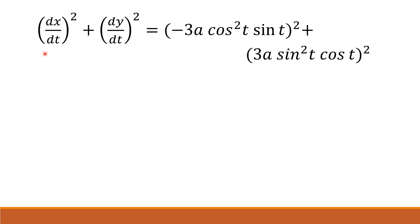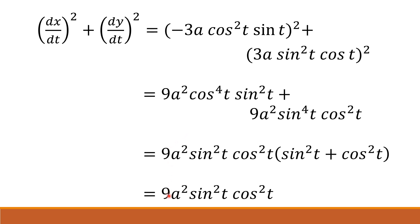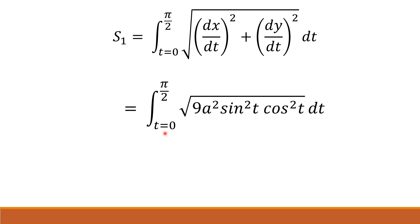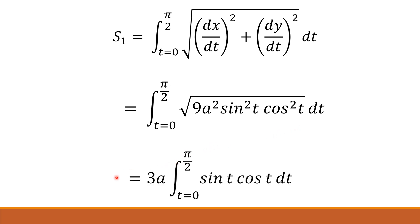Now we obtain the term inside the integral, (dx/dt)² plus (dy/dt)², by substituting the derivatives. Simplifying, we get 9a² sin²t cos²t. Replacing this in the arc length formula, s1 becomes the integral from 0 to π/2 of the square root of 9a² sin²t cos²t dt. Taking the square root gives 3a sin t cos t, and since 3a is constant, s1 equals 3a times the integral from 0 to π/2 of sin t cos t dt.